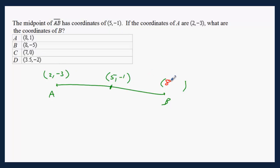Choice A: (8, 1). Is 5 the average of 8 and 2? Let's try. 8 plus 2 over 2 equals 10 over 2, which is 5. Good. 1 plus negative 3 over 2. 1 plus negative 3 is negative 2 over 2, which equals negative 1.